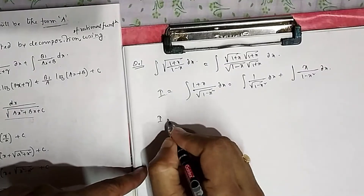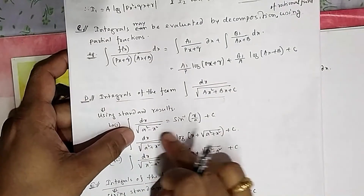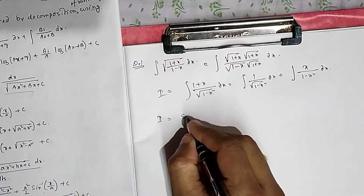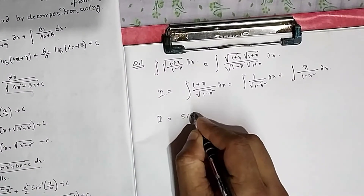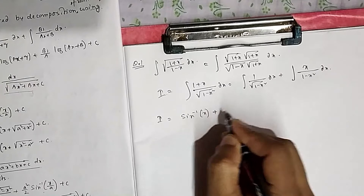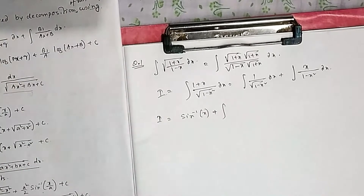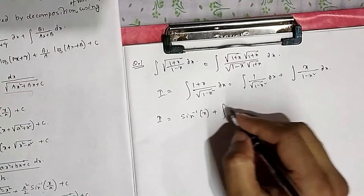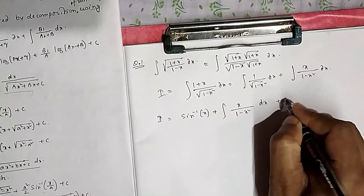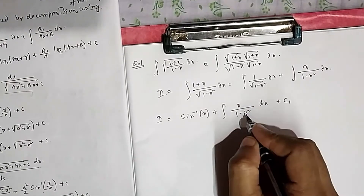The first part is a direct formula: ∫dx/√(1−x²) = sin⁻¹(x/a), and here a = 1, so it gives sin⁻¹(x). Write that result with constant c₁, since you've completed one of the two integrations.